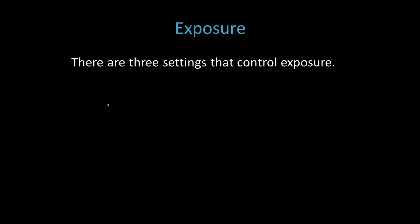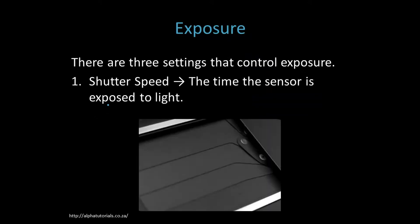There are three settings that control exposure in your camera. The first is the shutter speed — that is the time that the sensor is exposed to light. If you expose the sensor to light for two seconds it is going to expose it to twice as much light than if you exposed it for just one second.